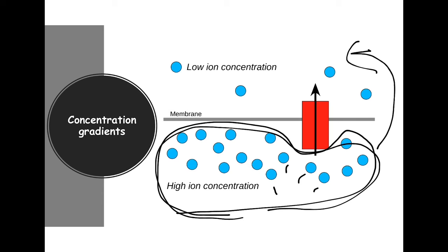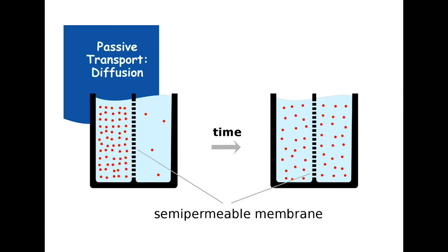Following a concentration gradient pretty much drives a lot of the processes we see when we talk about molecule transport. When we talk about diffusion or passive transport types, this is what is followed. So first we're going to start with the mechanisms of passive transport. The first one is basic diffusion — it follows the concentration gradient.